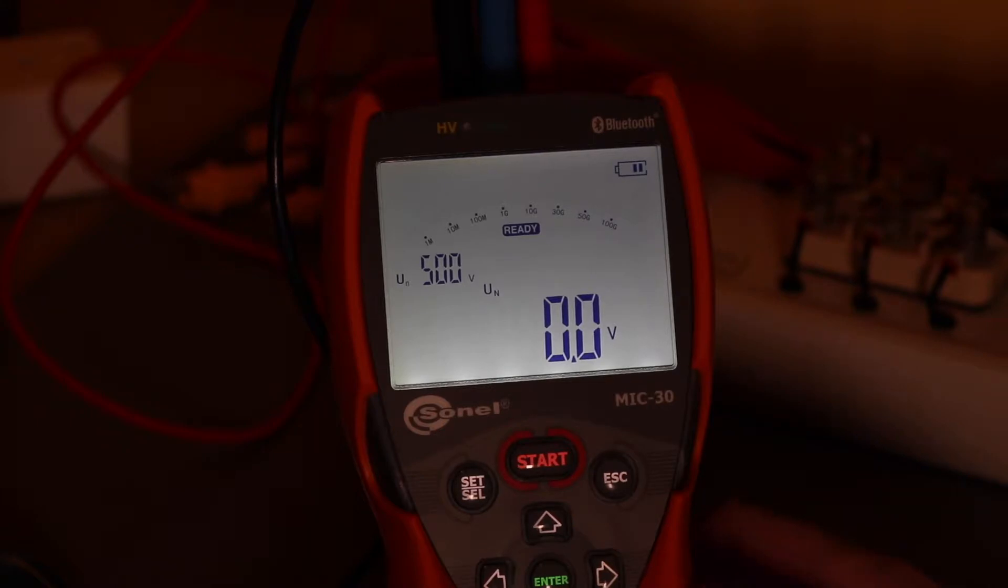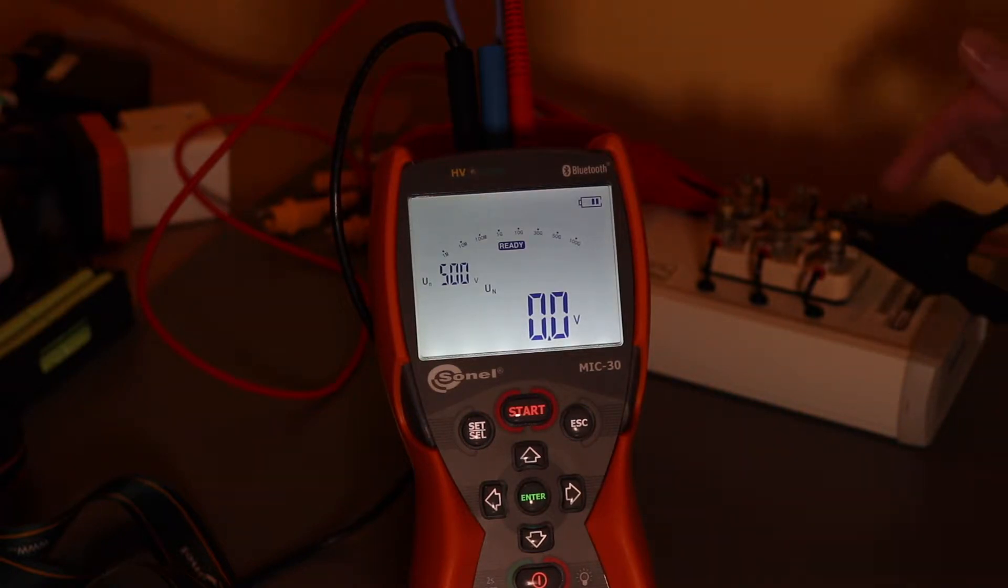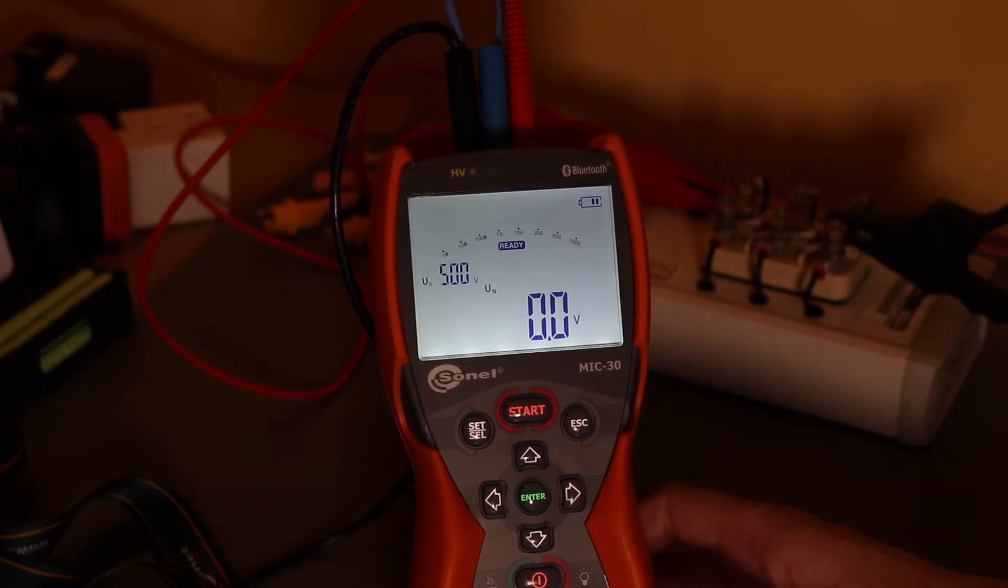I'm set up for a 500 volt test. I'm connected up over here to the winding simulator. This is a standard polarisation index test. So I've got one lead on one of the windings. The other lead is on the back here on the earth stud. And because I have a guard terminal on this tester, I can select the shielded test lead and link them two out to avoid any leakage between the leads.